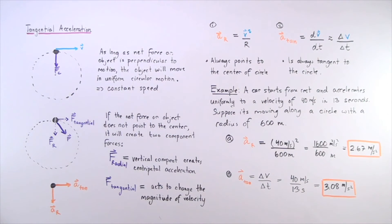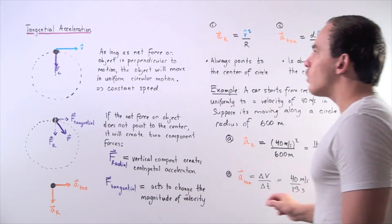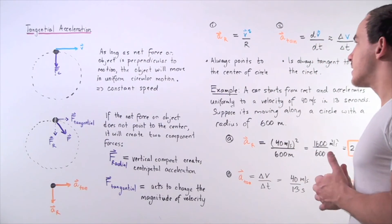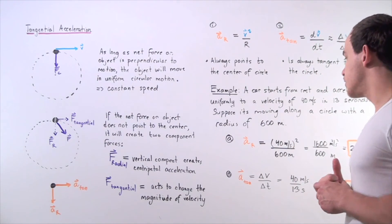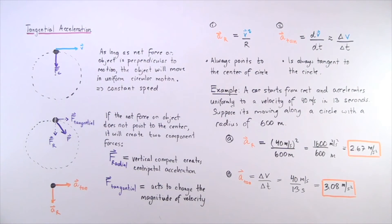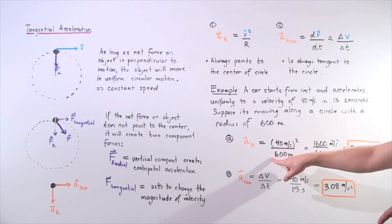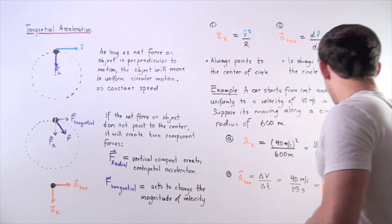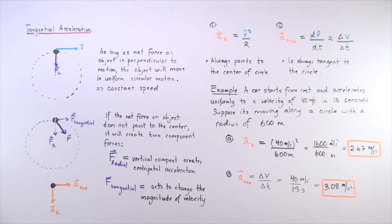Let's look at the following example. A car starts from rest and accelerates uniformly to a velocity of 40 meters per second in 13 seconds, moving along a circle with a radius of 600 meters. Assuming the tangential acceleration is constant, let's find the radial acceleration and the tangential acceleration. The radial acceleration equals velocity squared divided by radius: 40 squared is 1600, divided by 600 meters, giving a radial acceleration of 2.67 meters per second squared, pointing towards the center of the circle.